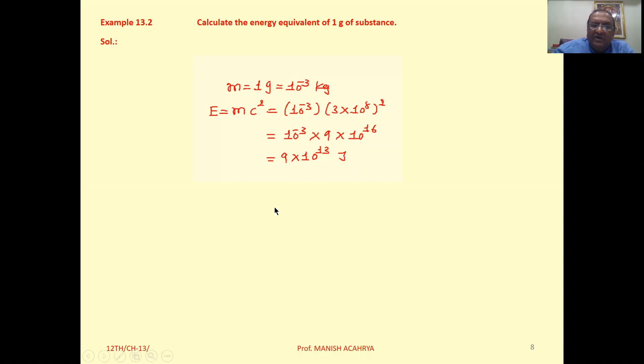Or directly you can calculate this one like this also. So 1u, actually 1u, that is 1.66 into 10 raised to minus 27.